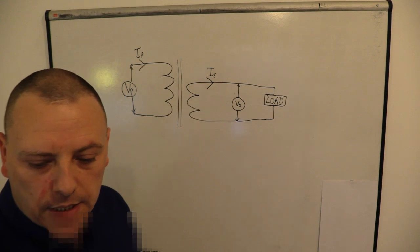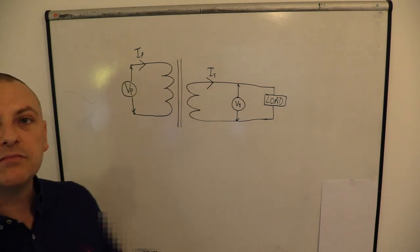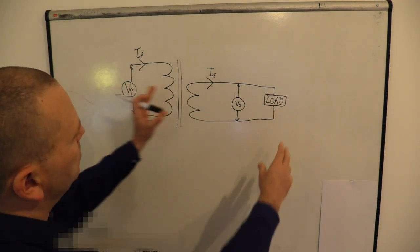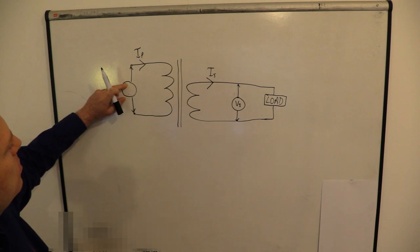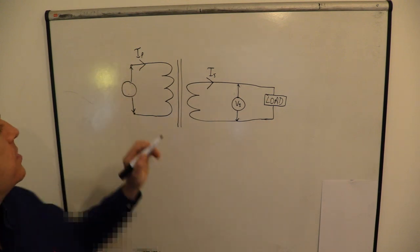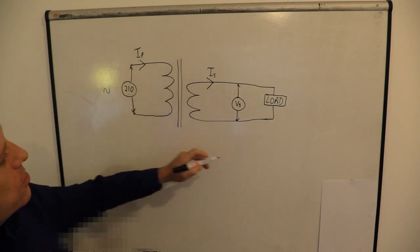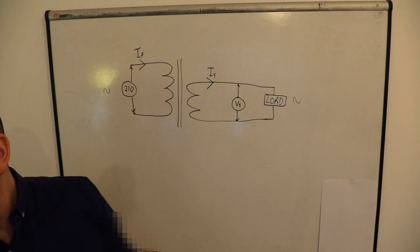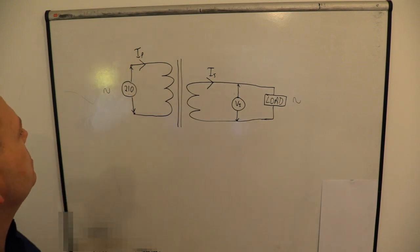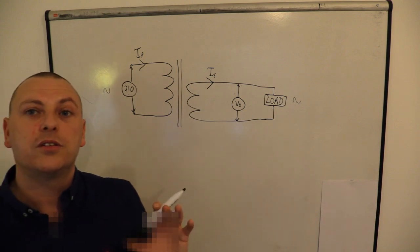I've drawn it on the board and this is how it's kind of set up. We've got a load pulling the power through the transformer. We know our primary voltage - that was 210 volts. This is AC obviously because it's a transformer. We don't know our primary current, secondary current, or secondary voltage. So let's start - there are a couple of ways we can do this.